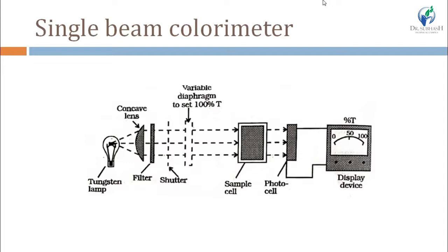However, the readings are greatly affected by fluctuations in the intensity of the radiation source. Also, a recorder cannot be used with a colorimeter, so we cannot record our result — we can only get a one-time reading.